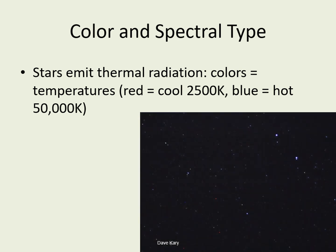The coolest stars are red stars, with surface temperatures of only a couple of thousand Kelvin. The hottest stars are blue-white stars with surface temperatures of tens of thousands of Kelvin. Our sun is a yellow-white star with a surface temperature of 5,800 Kelvin.